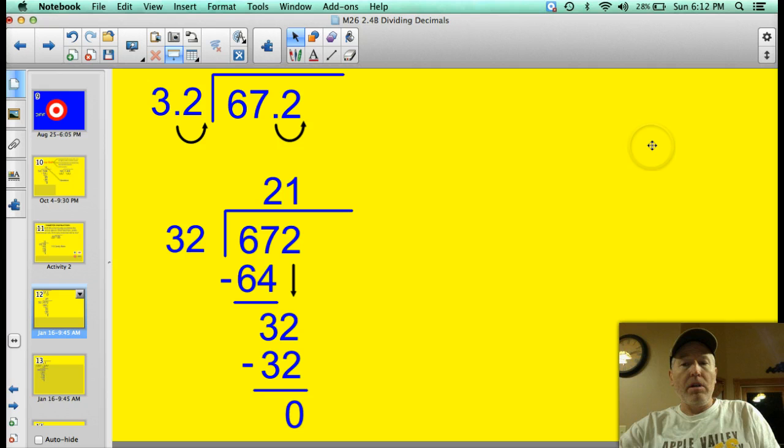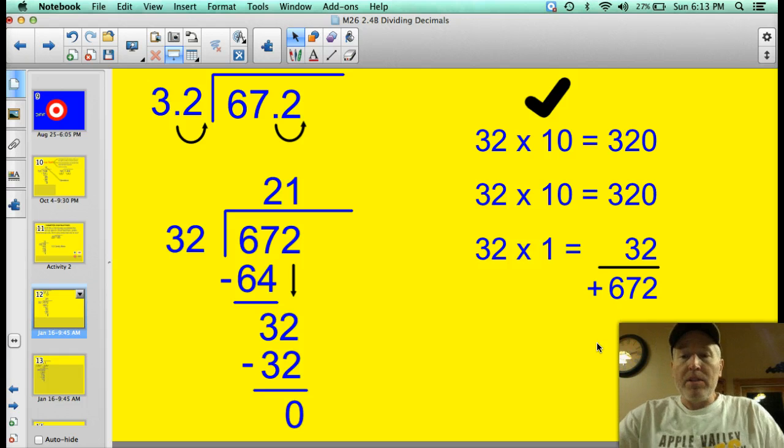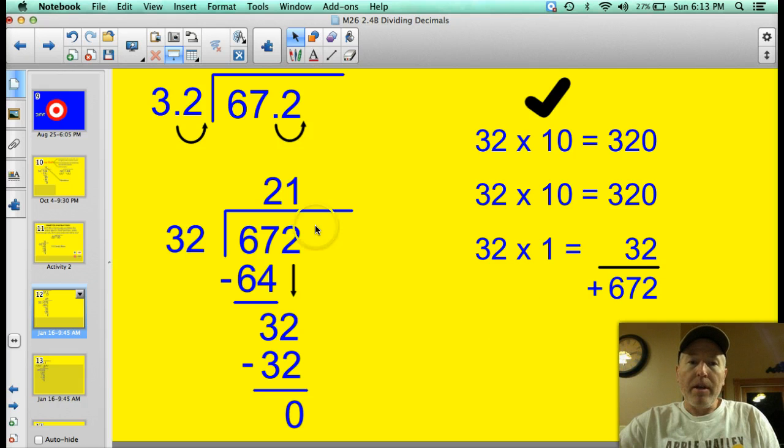But is it right? Well, let's take a quick peek here. Just some quick logic. Well, 32 times 10 would be 320. So 32 times 10 again is 320. So I'm up to 640 over here. And I've got 20 32s. If I take one more, 32. 32 times 1 would be 32. Now I've got my 21 32s. There's 21 of them. 10, 21. Add that all if I have 672. That mental gymnastics, I'd like you to get used to doing. Just so that you have a quick check to make sure your answer makes sense and is right. So the answer to 3.2, sorry, 67.2 divided by 3.2 is 21. That is your quotient.